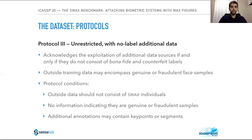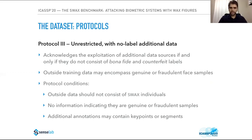Protocol three acknowledges the exploitation of additional data sources to improve algorithm precision. The main difference from protocol two is that protocol three supports adoption of further data only if it does not consist of bona fide or counterfeit labels. Outside data cannot include individuals from the SWACS database. External pictures cannot indicate whether they are genuine or fraudulent. However, additional pictures can be labeled with key points or segments for preprocessing algorithms, such as face alignment before identification.